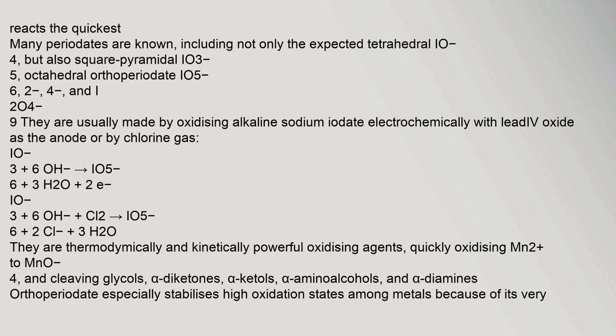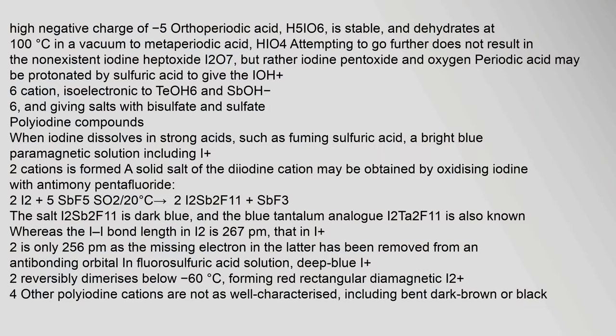Many periodates are known, including not only the expected tetrahedral IO₄⁻ but also square pyramidal IO₃⁻, octahedral orthoperiodate IO₆⁵⁻, and others. They are usually made by oxidizing alkaline sodium iodate electrochemically with lead dioxide as the anode, or by chlorine gas. Periodates are thermodynamically and kinetically powerful oxidizing agents, quickly oxidizing manganese(II) to MnO₄⁻ and cleaving glycols, alpha-diketones, alpha-ketols, alpha-amino alcohols, and alpha-diamines. Orthoperiodic acid (H₅IO₆) is stable and dehydrates at 100°C.